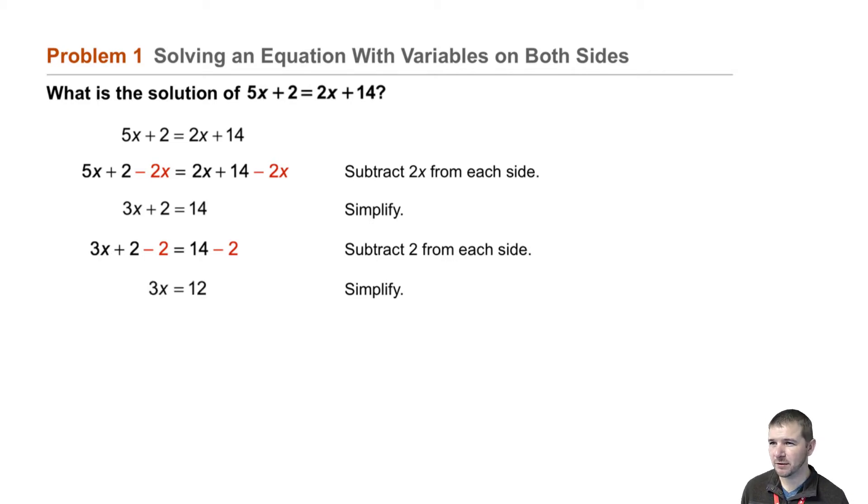We're down to a one step equation. We need to do the inverse operation of multiply. The inverse of multiply by 3 is divide by 3, so we divide each side of the equation by 3. 3x divided by 3 is x, and 12 divided by 3 is 4.